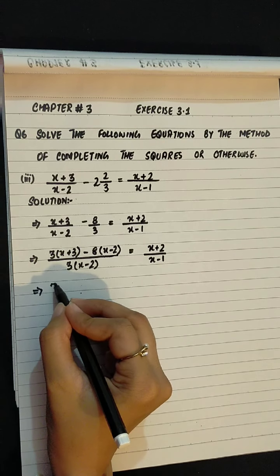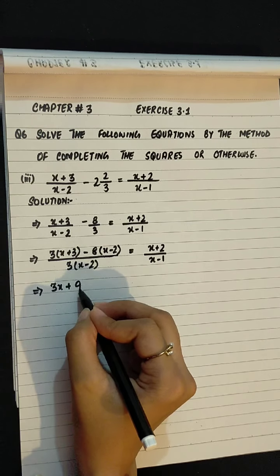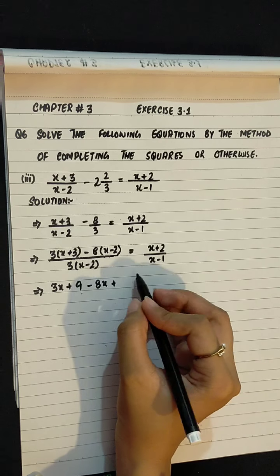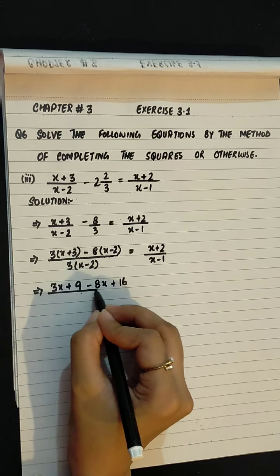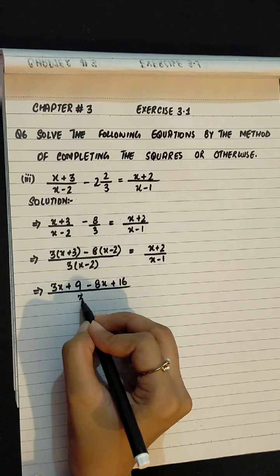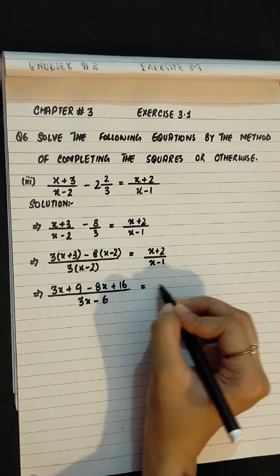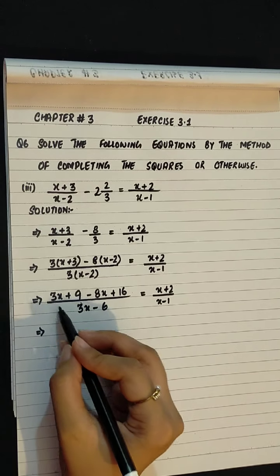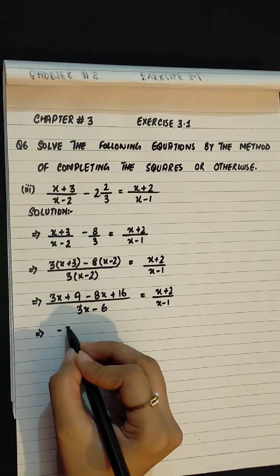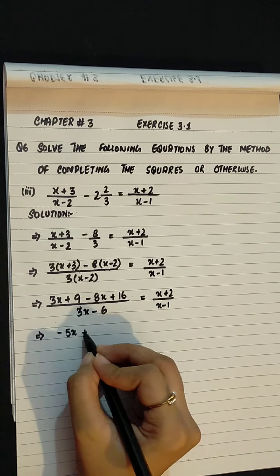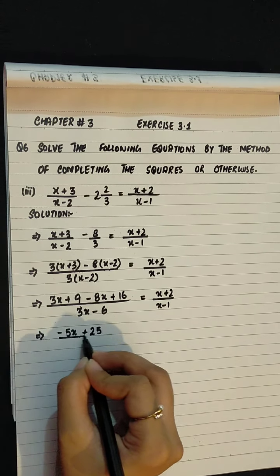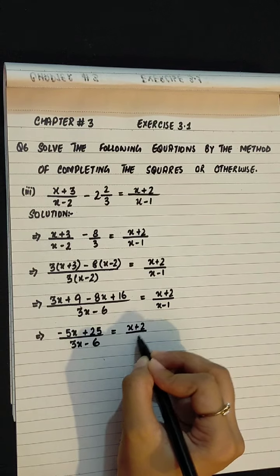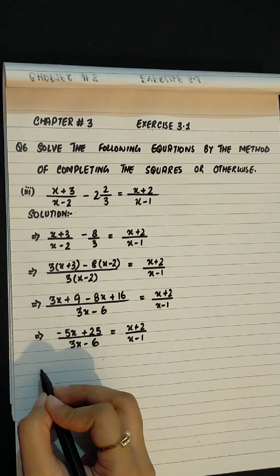Bracket open. 3 into x, 3x, 3 into 3, 9 minus 8x minus minus plus 16. Here we will open the bracket. So 3x minus 8x plus 9 plus 16 plus 25 divided by 3x minus 6 equals to x plus 2 divided by x minus 1.